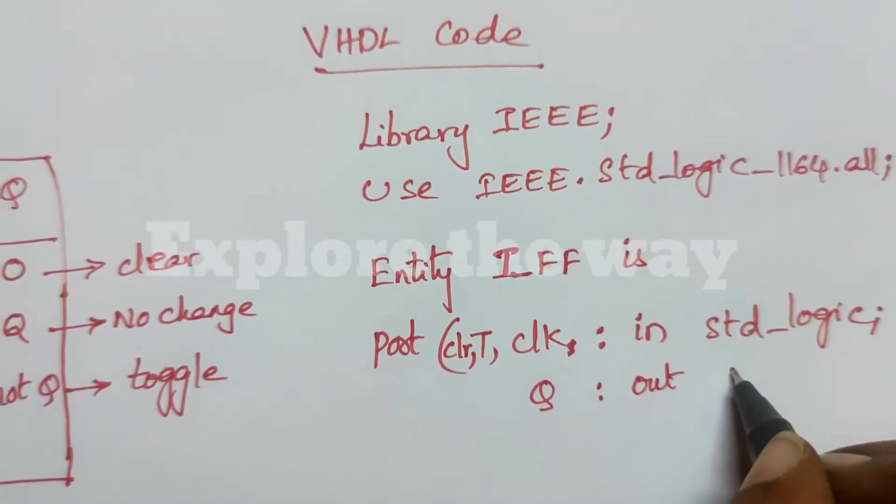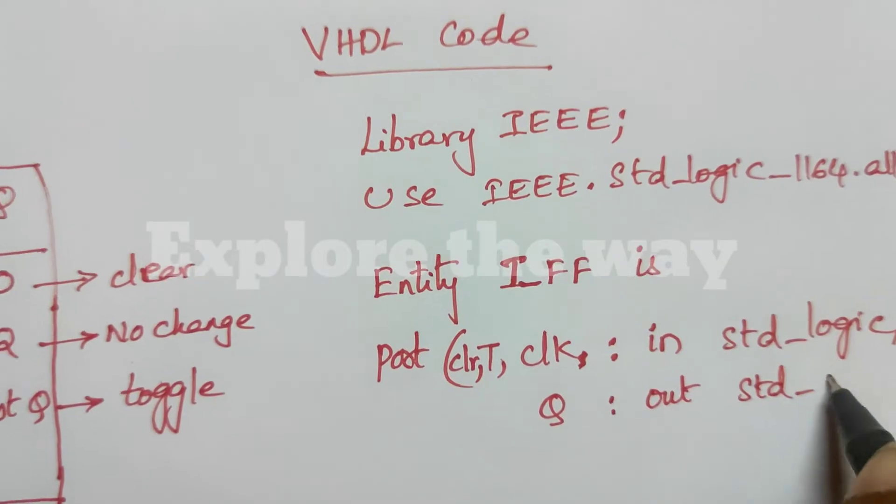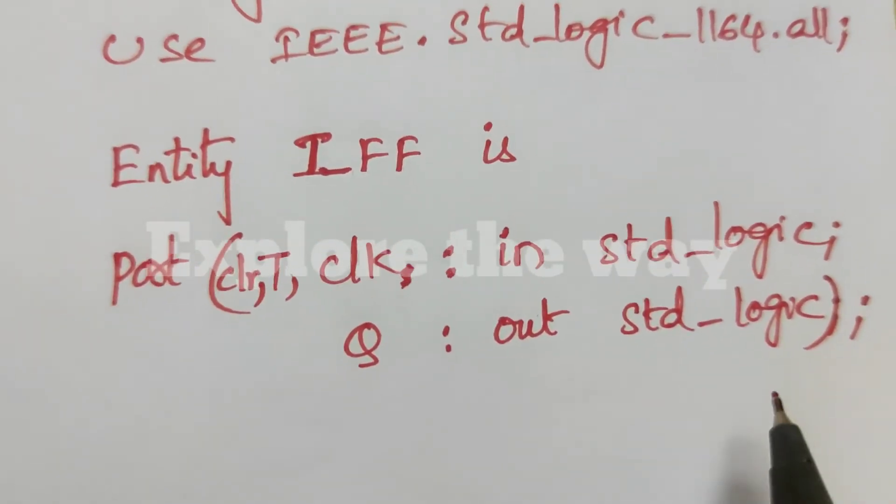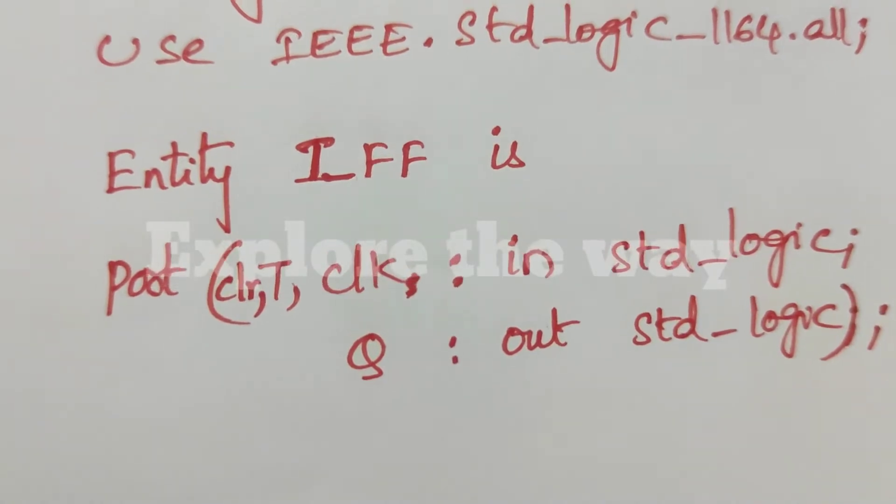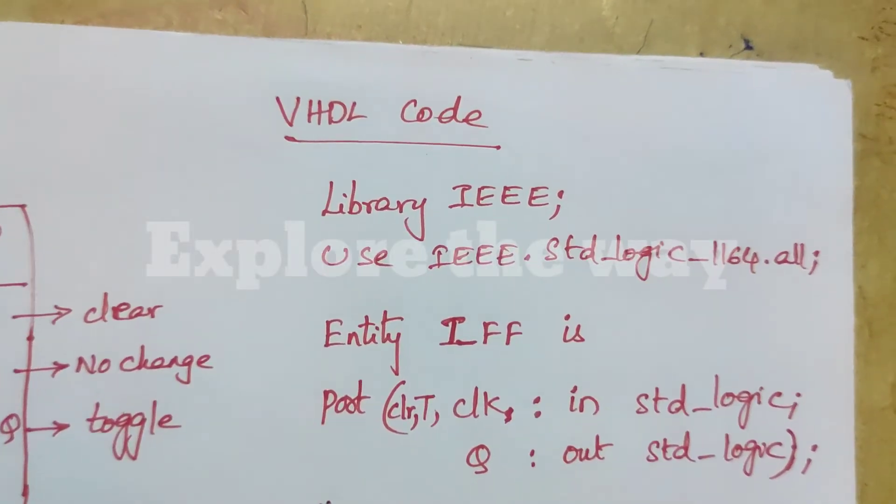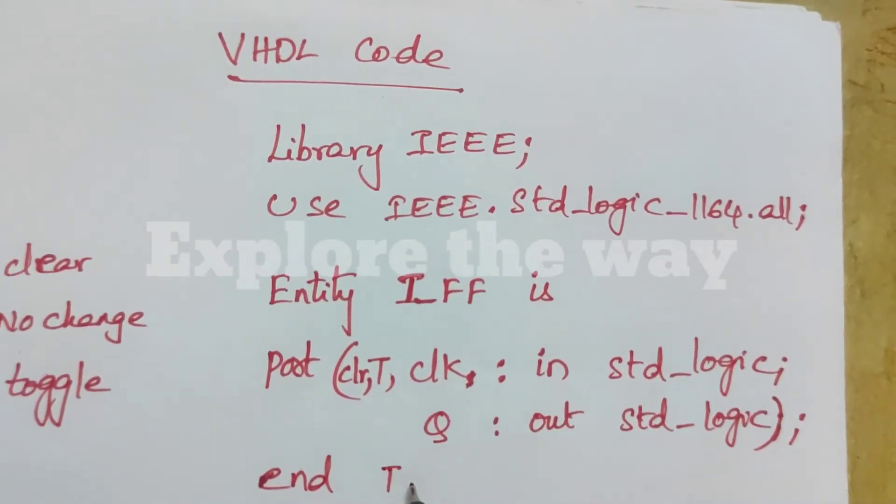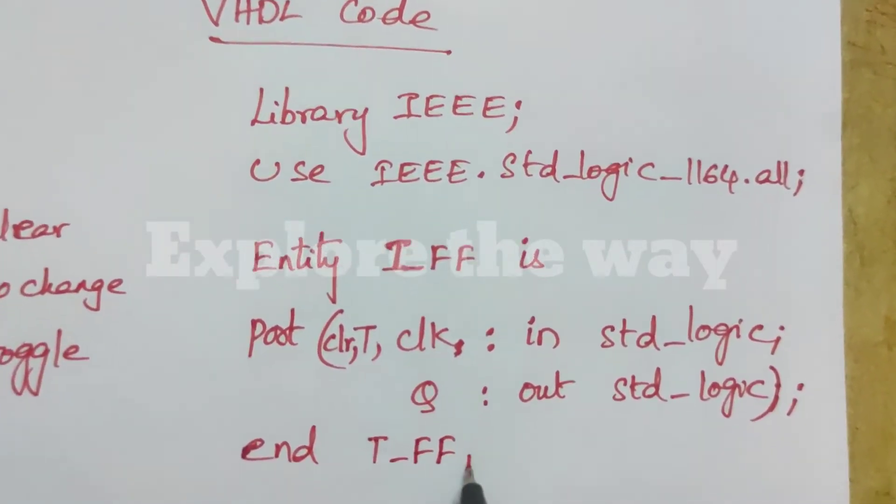Out. Here, I am writing Q only. So, for the last one, close bracket and put semicolon. End the entity. End, write the entity name, T flip-flop.